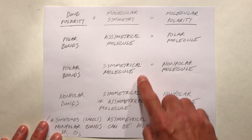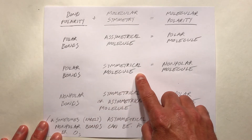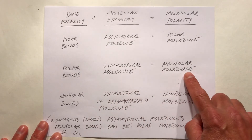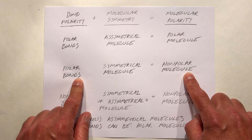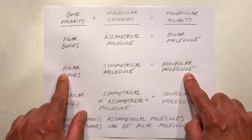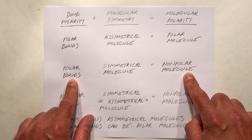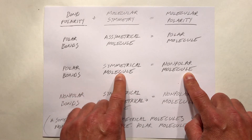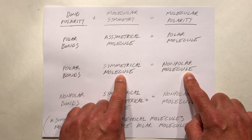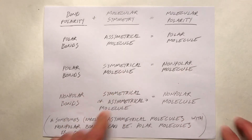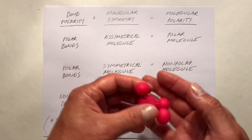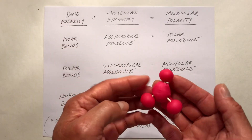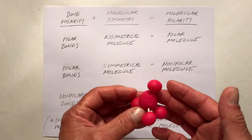If we have polar bonds and a symmetrical, or balanced, molecule, then even though electrons are distributed unevenly across the bonds, that uneven distribution will balance out because of the balanced structure, and we'll get a non-polar molecule.